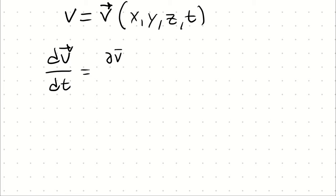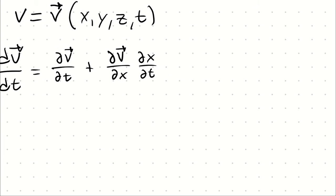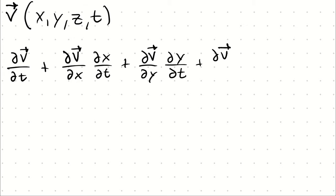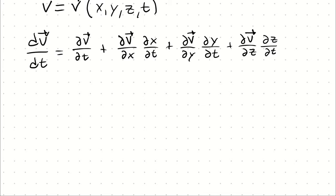The derivative of velocity with respect to time must include each of those independent variables. It begins as a partial derivative of velocity with respect to time, and then we add the partial derivative of velocity with respect to x times the derivative of x with respect to time, plus the partial derivative of velocity with respect to y, plus the partial derivative of velocity with respect to z times the derivative of z with respect to time. For convenience, we refer to the x, y, and z components of velocity as u, v, and w in Cartesian coordinates.